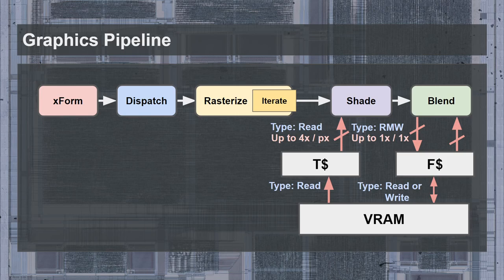One of the most bandwidth-intensive tasks during rendering is the blend stage, which consists of a read-modify-write operation for every pixel being rendered. If the GPU cannot generate these at a rate of one per cycle, it will have to stop drawing until memory can keep up. That motivated adding a frame store containing a small amount of the frame buffer to accelerate drawing. However, ensuring hits to the frame store is not practical in general — the solution, as previously described, was binning.